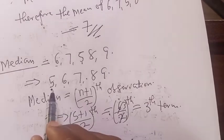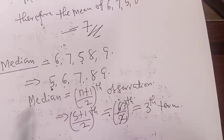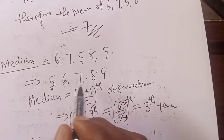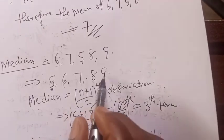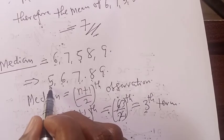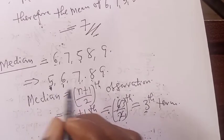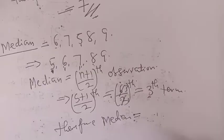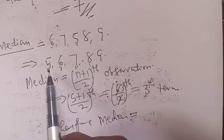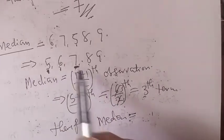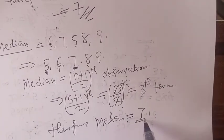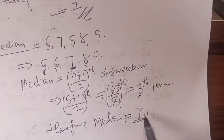From the data rearranged in ascending order — 5, 6, 7, 8, 9 — we count: the first is 1, second is 2, third is 3. Therefore, the median is equal to the third value, which is 7. So, median is equal to 7. That is the bonus for this class.